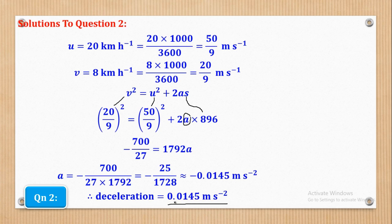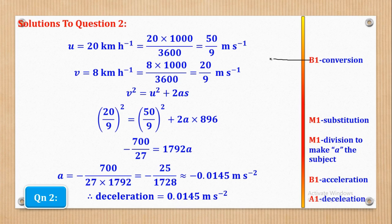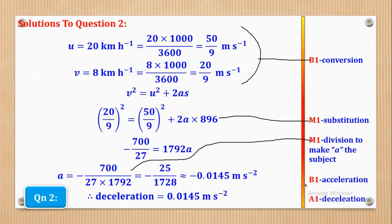Remember they asked for deceleration, not acceleration. So we conclude that deceleration = 0.01545 m/s². The negative sign on the acceleration implies there is a deceleration, so when stating deceleration the negative is dropped. For the mark scheme: B1 for conversion, M1 for substituting in the third equation, M1 for making A the subject, B1 for the numerical answer, and A1 for correctly stating the deceleration without the negative sign.